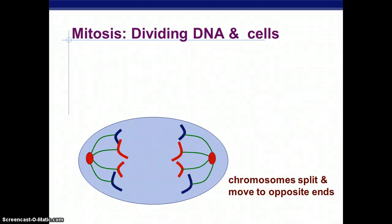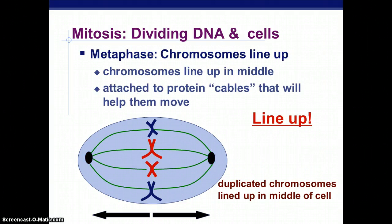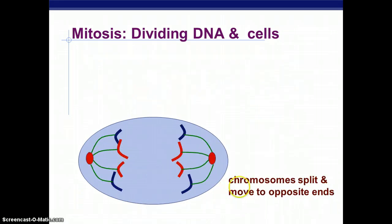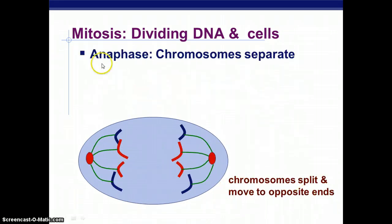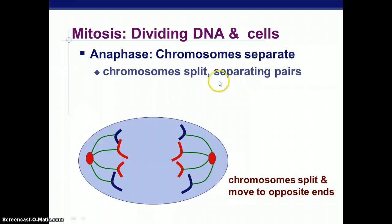Once the chromosomes have lined up, they can start to be pulled away, moving from metaphase to anaphase. Anaphase — A is for away — the chromosomes separate and they move away from each other. These spindle fibers shorten, pulling those halves of the chromosomes apart.